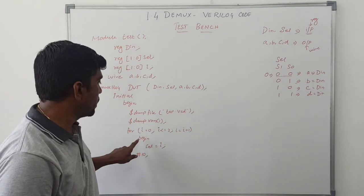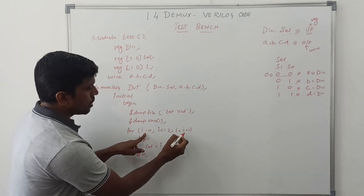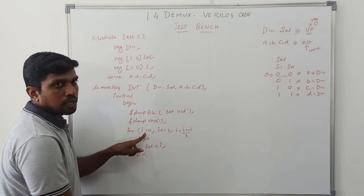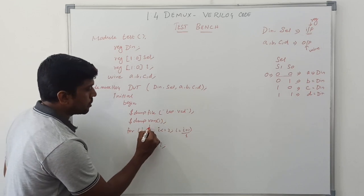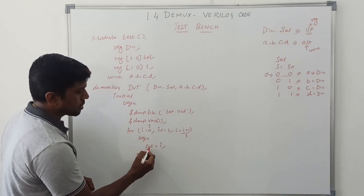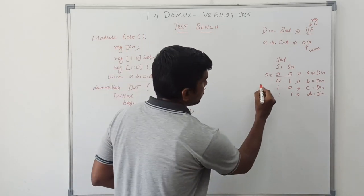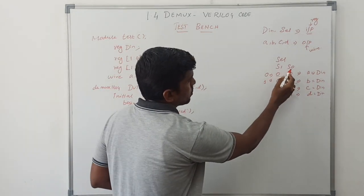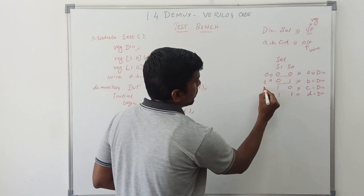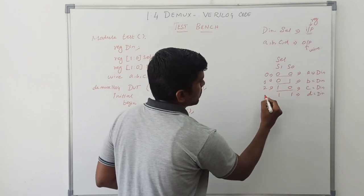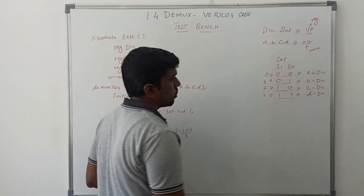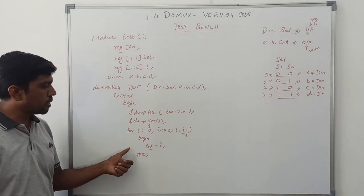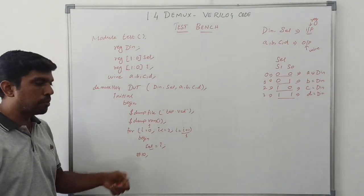After 10 nanoseconds, change the I value — I = I + 1, so I value increments by 1. Now I value is set to 1, and this 1 is assigned to the selection line, meaning S1 S0 = 0,1. Then 2 represents 1,0 and 3 represents 1,1. Likewise, after every 10 nanoseconds, the selection line value changes.